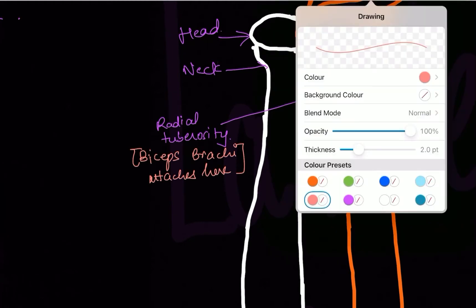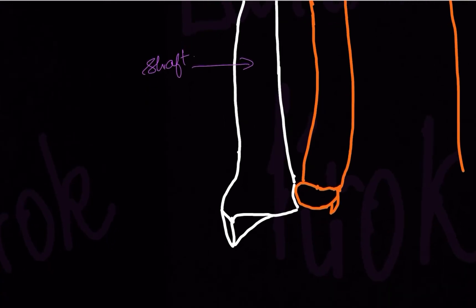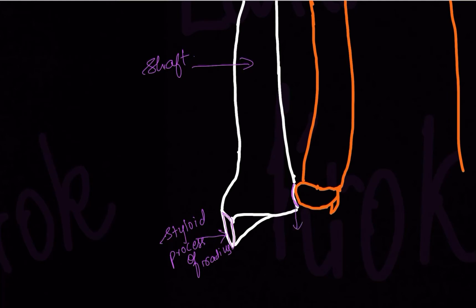The shaft of the radius follows after the radial tuberosity. Then there is a conical-shaped projection called the styloid process of the radius. Both ulna and radius have a styloid process, so we specify which one we mean. There is also a concave shape on the radius called the ulnar notch, which will articulate with the head of the ulna.